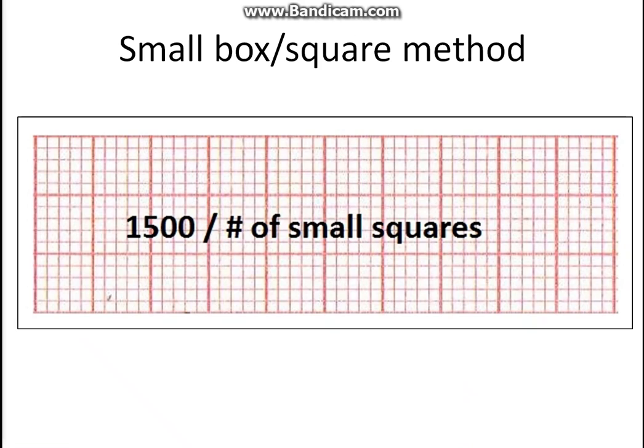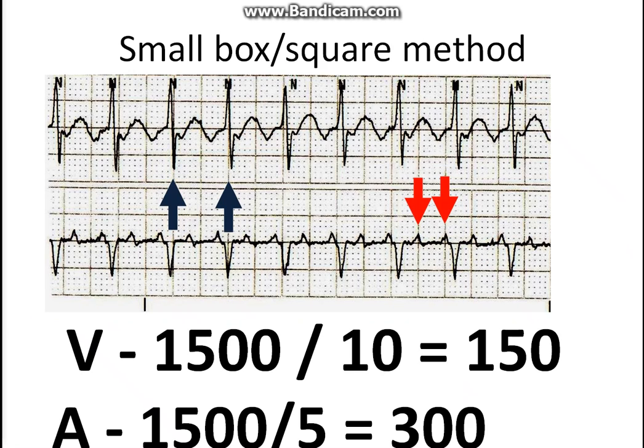Next is the small square method. The rate is computed using the formula 1500 divided by the number of small squares inside the R to R. For the ventricular rate there are ten small squares in this RR interval, so 1500 divided by 5 equal to 300 beats per minute. For the atrial rate there are five small squares in a PP interval, so the rate is 1500 divided by 5 equal to 300 beats per minute.